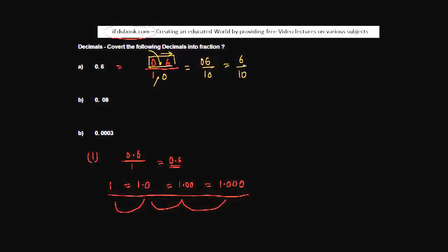If you want to solve it further, divide both the numerator and the denominator by 2. 6 divided by 2 gives you 3. 10 divided by 2 gives you 5. 3 divided by 5. So we have converted 06 into a fraction by following this procedure.